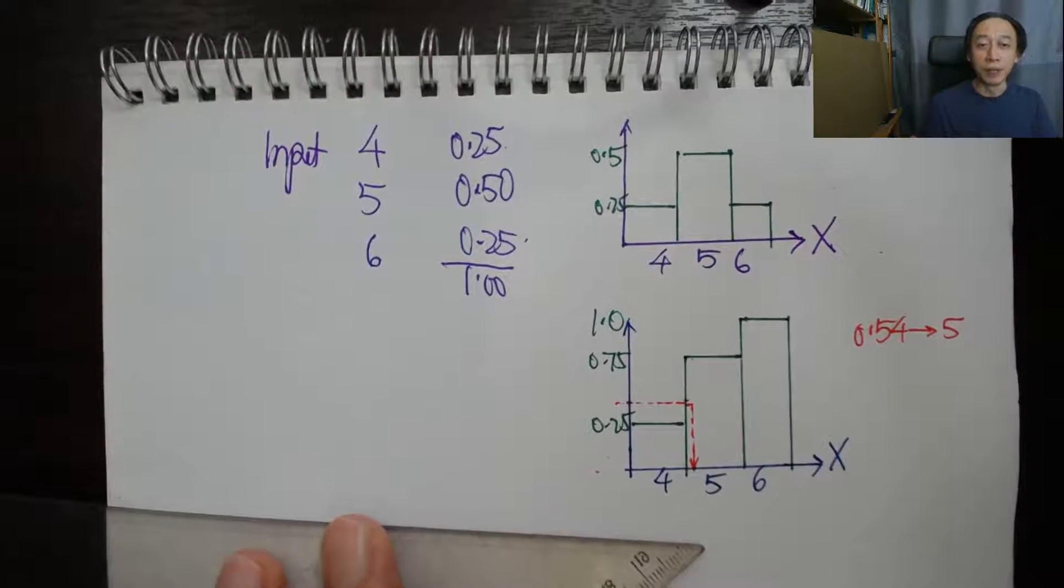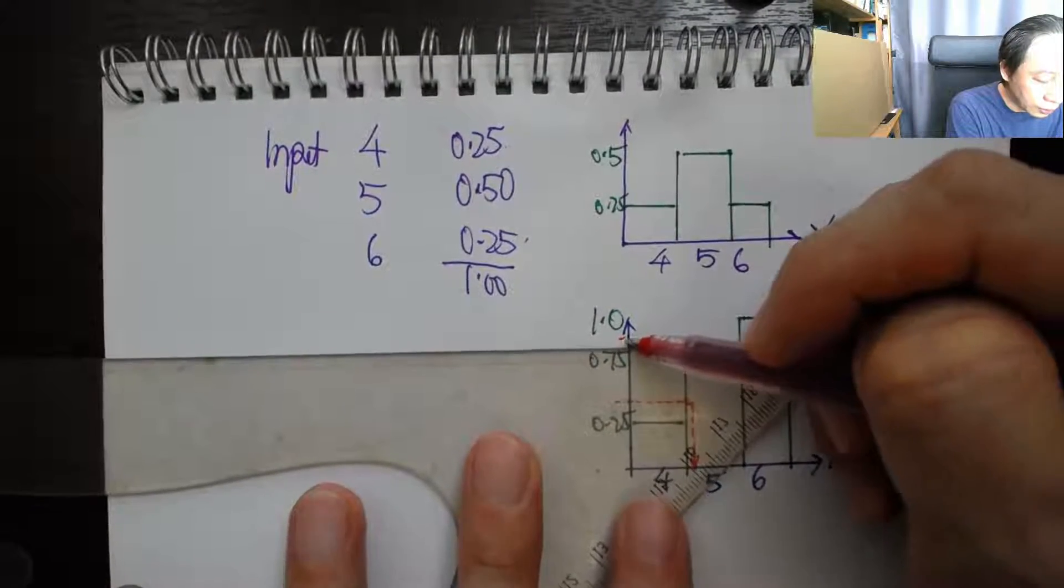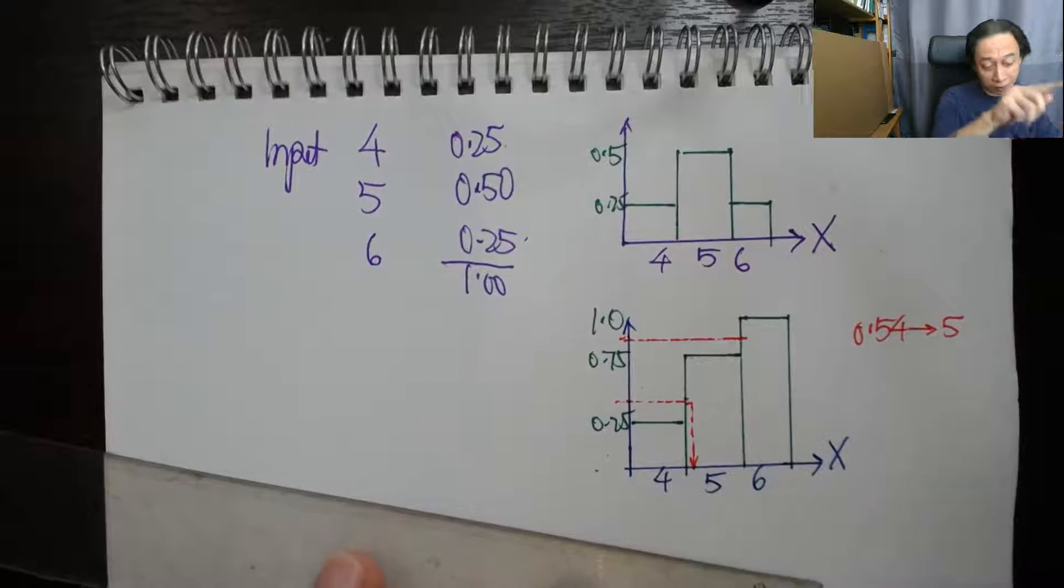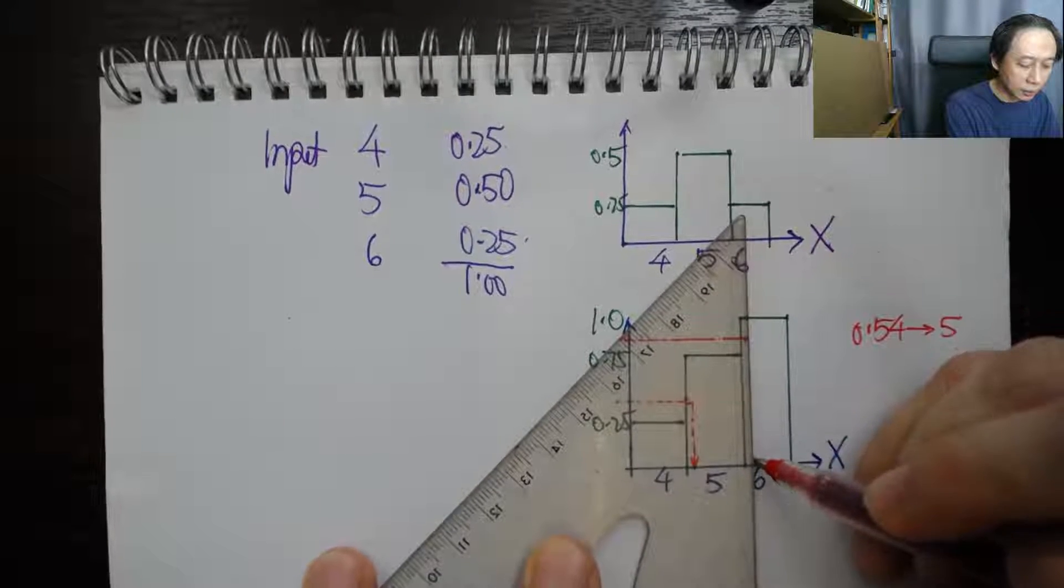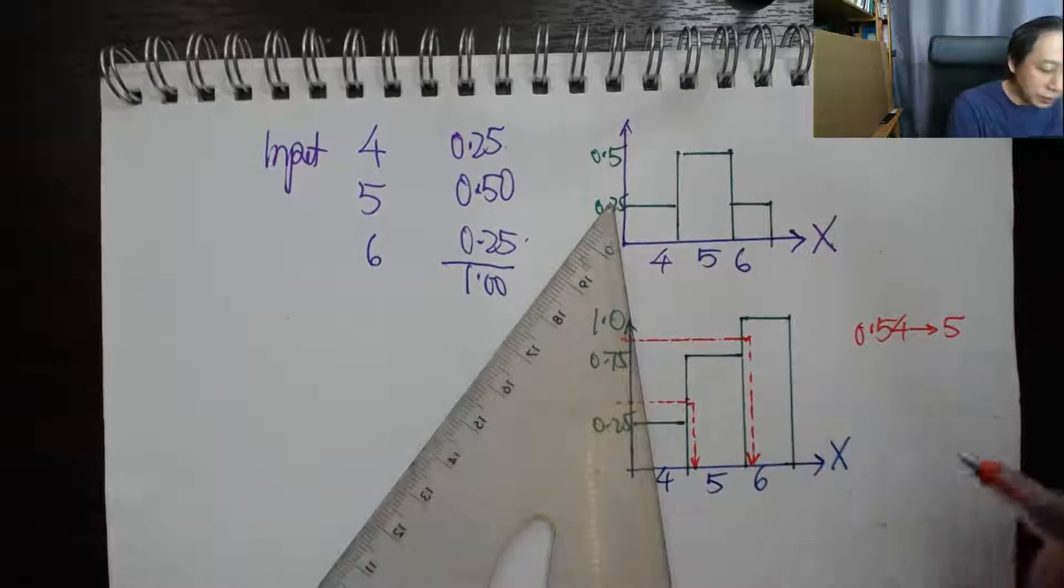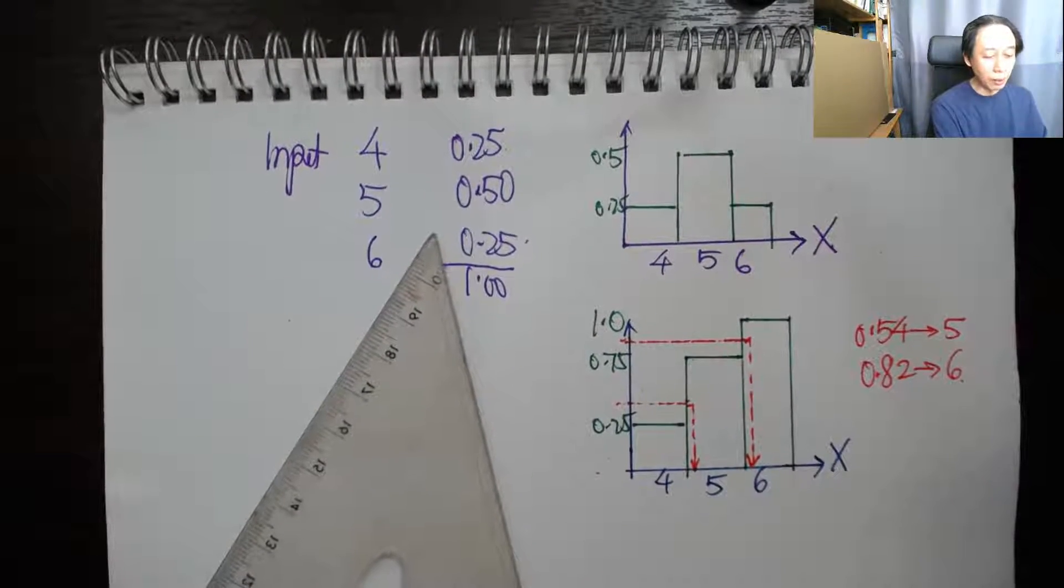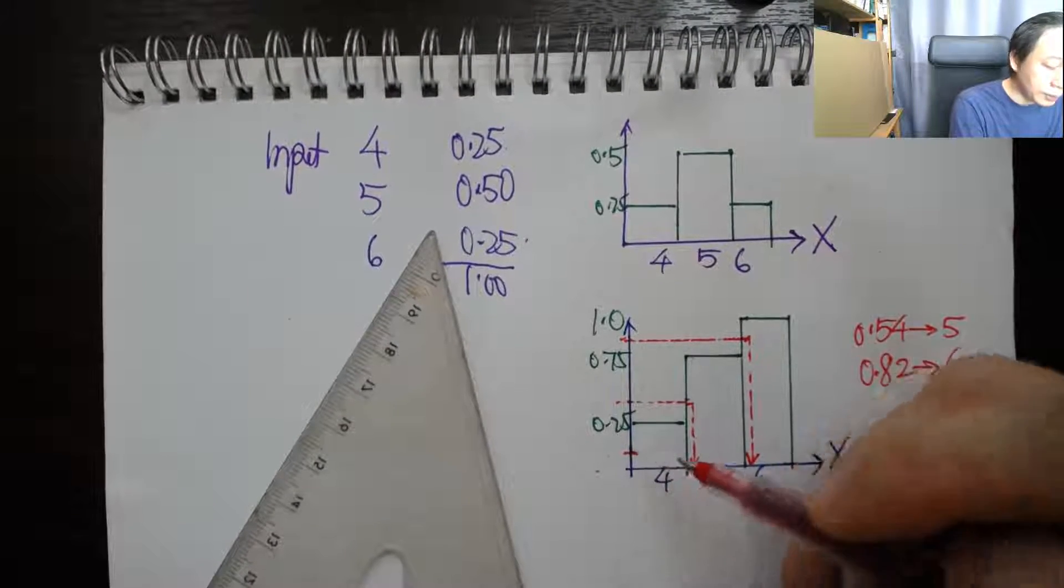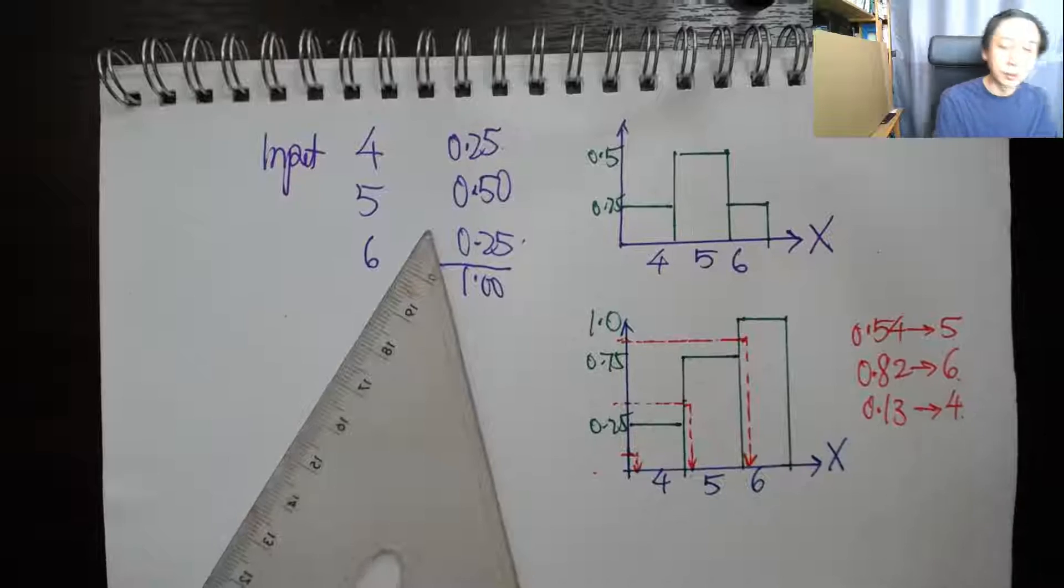Let's try another number. 0.82, okay good. So 0.82, we get here, and it goes from the y-axis to the CDF curve, which is kind of like a staircase. It hits the wall and drops down, and you get the number six. I kind of jutted it a bit more to the right just to be sure that it is six, not five. So 0.82 gives us six. If we get 0.13, for example, then it is here, and immediately it kind of hits the wall and drops down, and we get four. So 0.13 gives us four, you can see that?